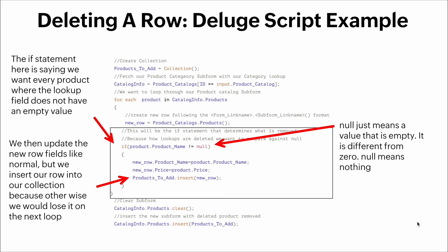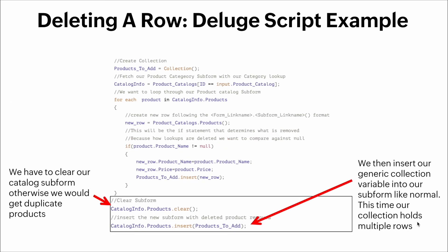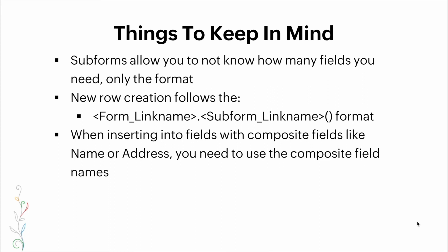Null means a value that is empty — it is different from zero; null means nothing. We must clear the catalog subform, otherwise we would get duplicate records. We then insert our generic collection variable — which now holds multiple rows — into the subform like normal.